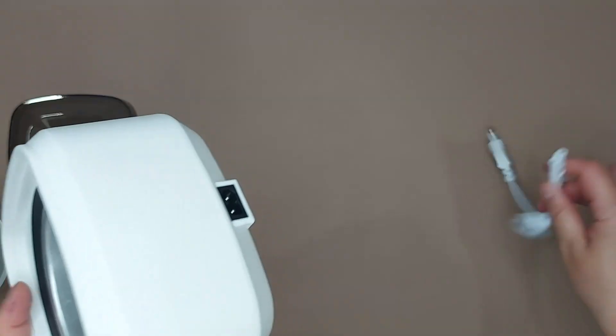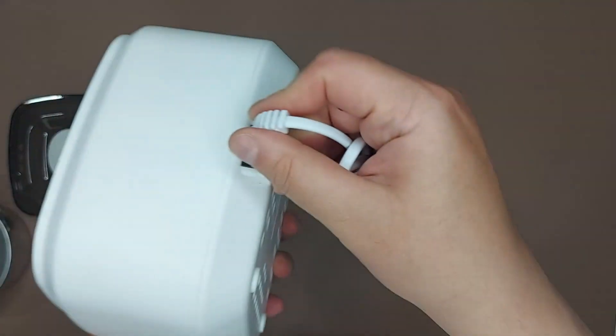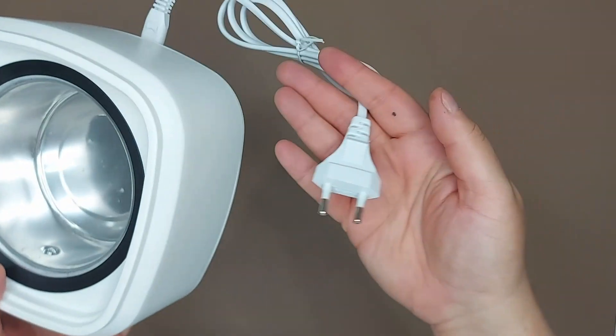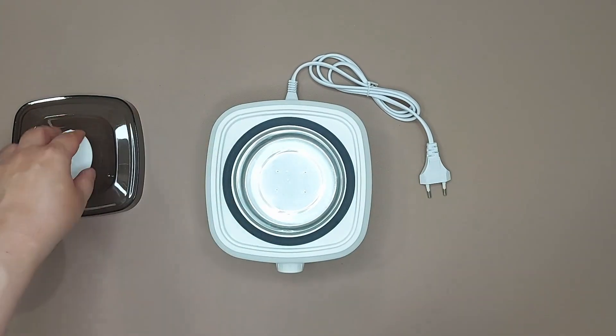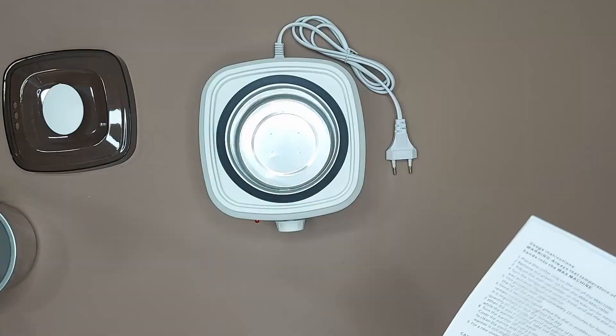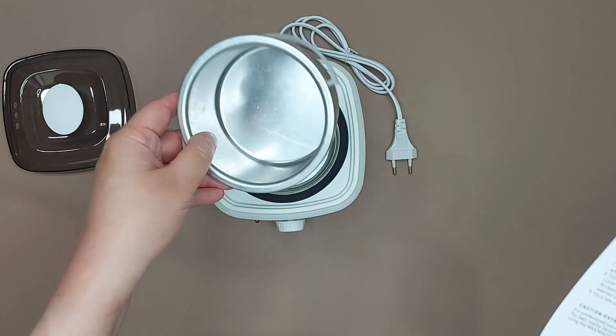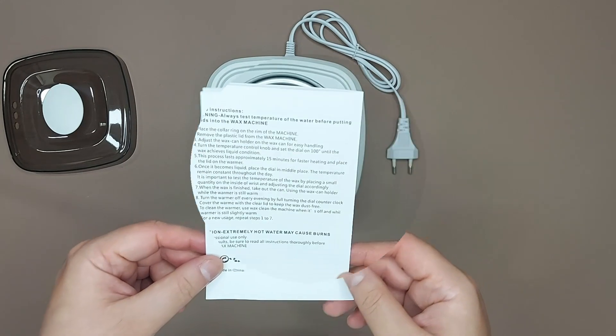So how do you use this? Well, of course, first you have to plug in the power cord like so, and you remove the plastic lid from the machine and you will insert the pot here. So let's read the instructions together.